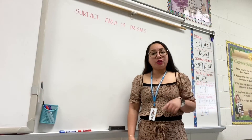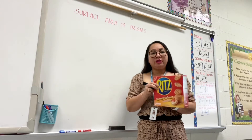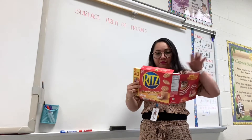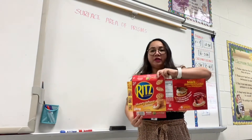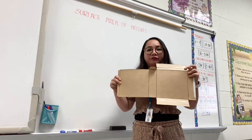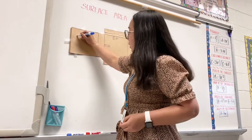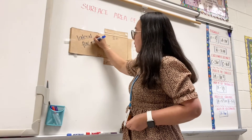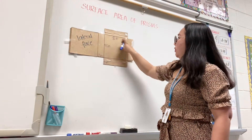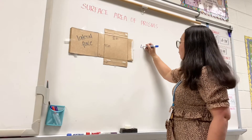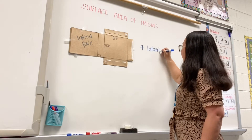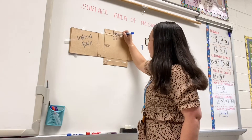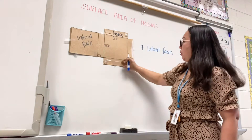To know how much wrapper I need to cover the whole box, I will decompose this box. This is how the box looks after decomposing it. This is what we call the lateral face, and we have one, two, three, four — so there are four lateral faces. And this one is what we call the base, and there are two bases.